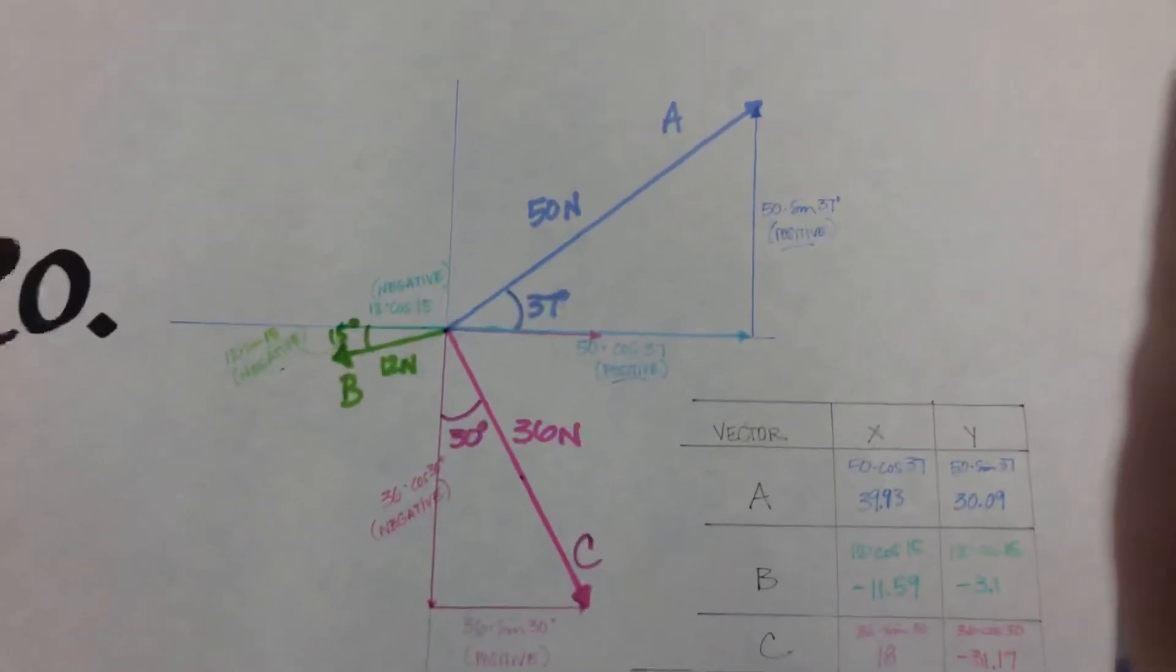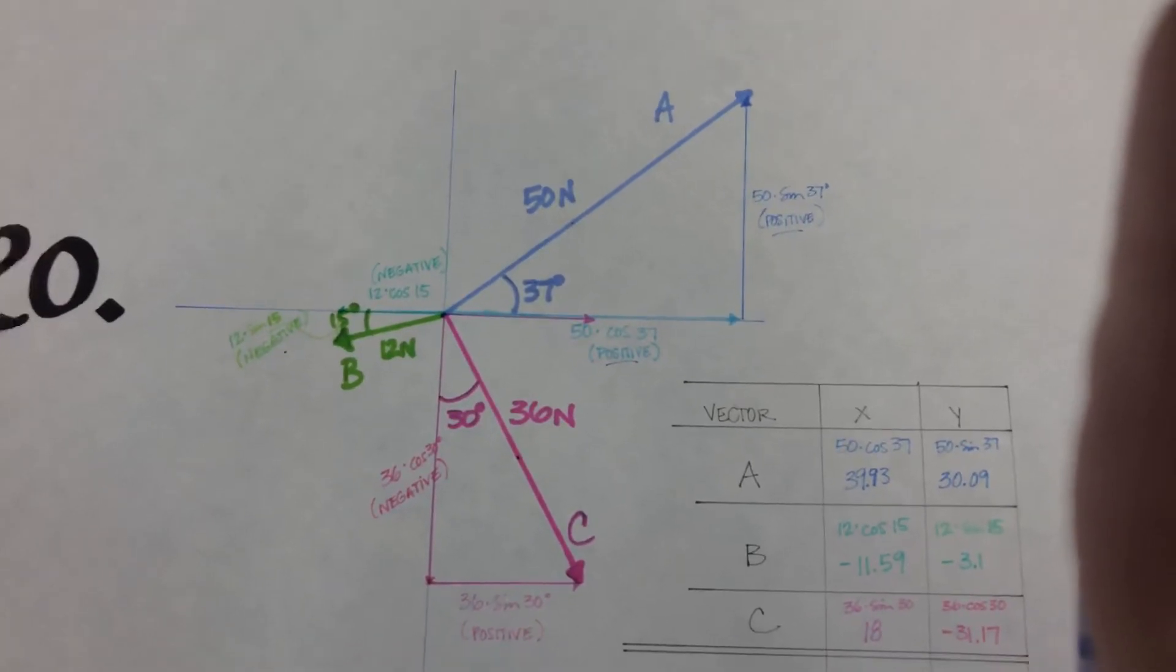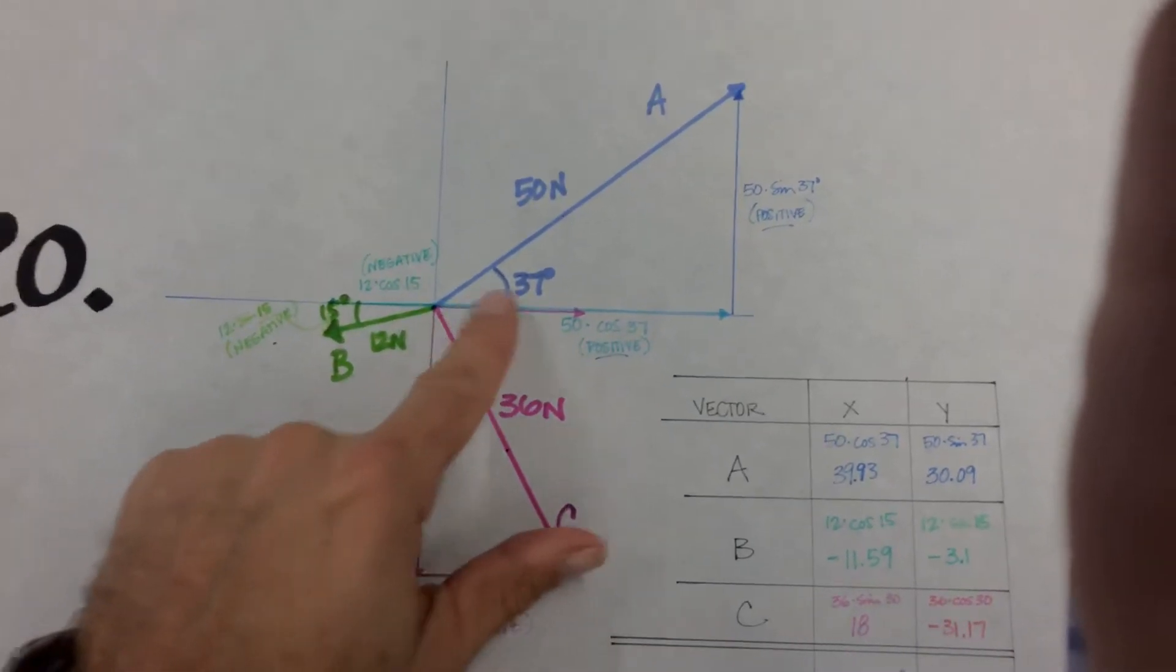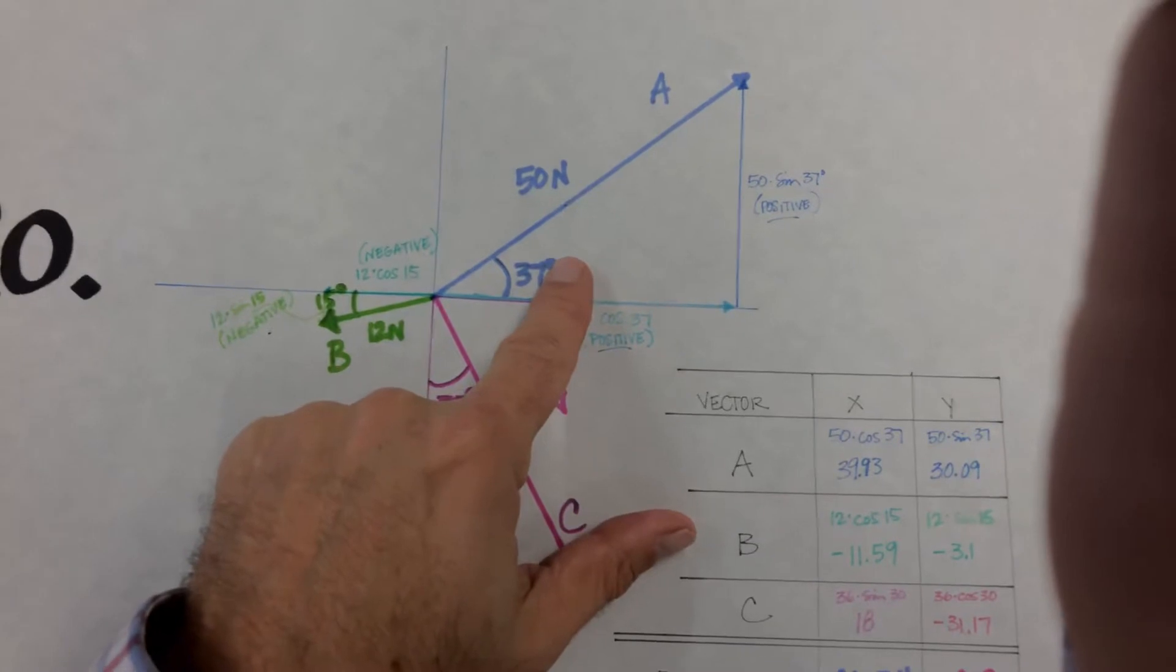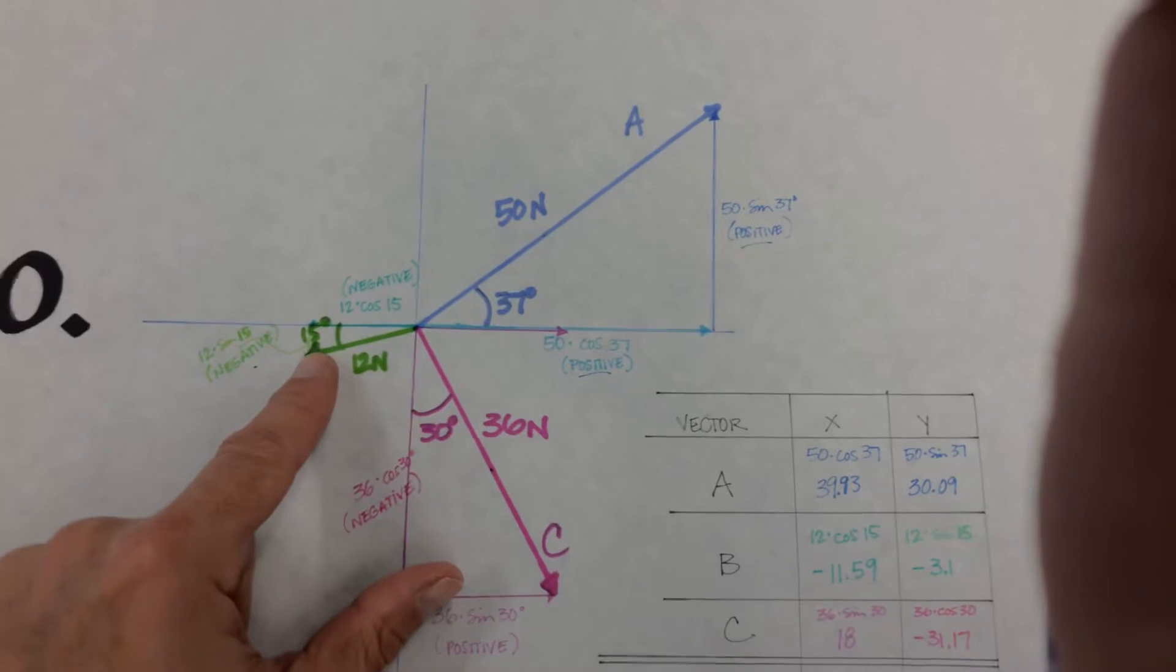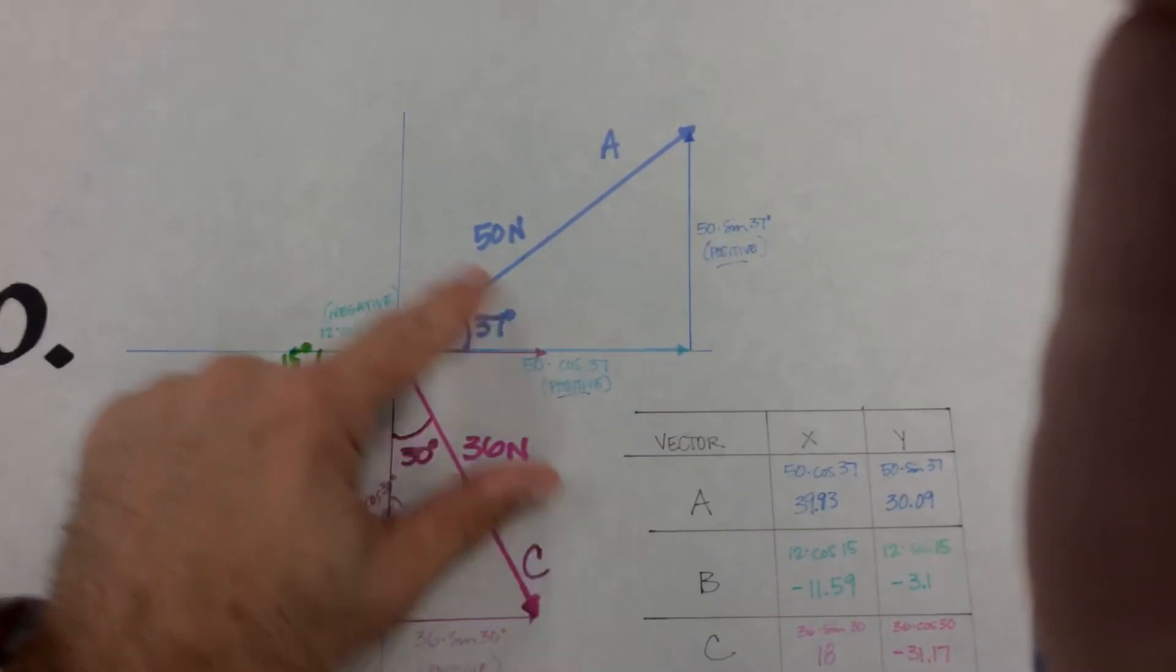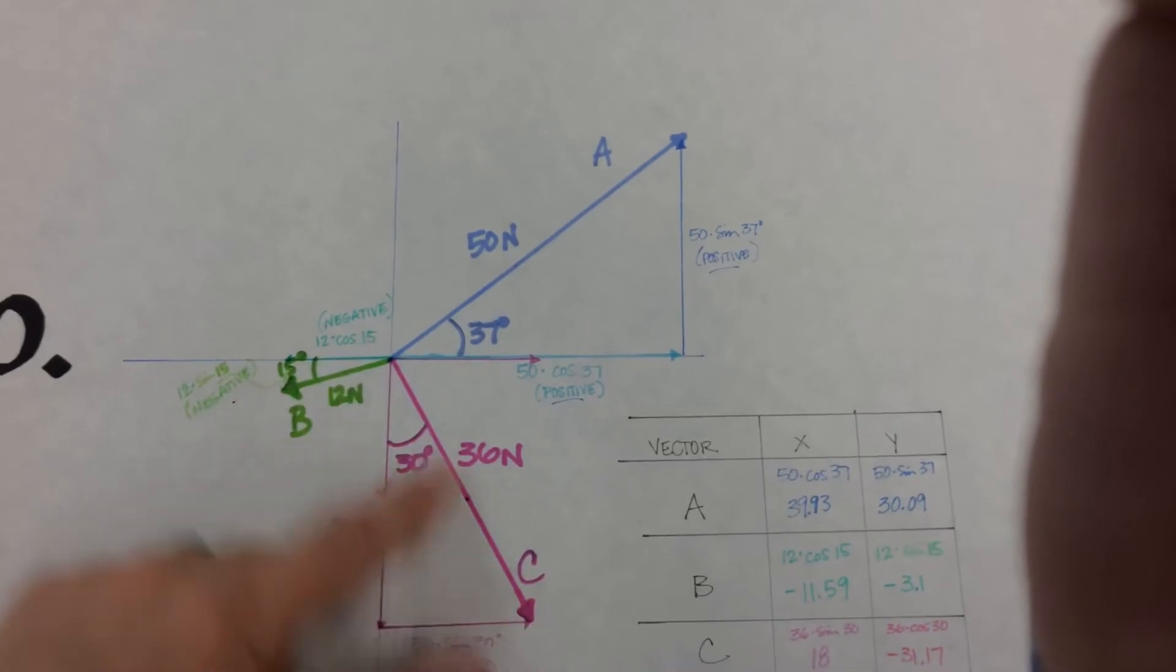All right, question number 20 says three forces are acting on the same object. The forces are A, a 50 Newton force directed at 37 degrees; B, a 12 Newton force directed at 195, so 180 and 15; and C, a 36 Newton force directed at 300, 270 plus 30, 36 at 300.